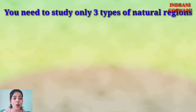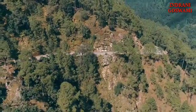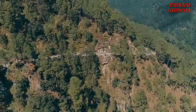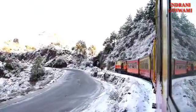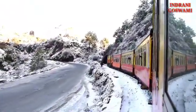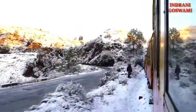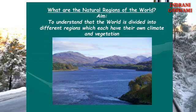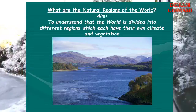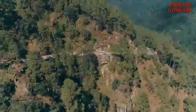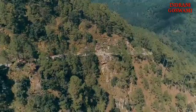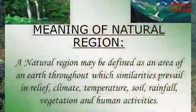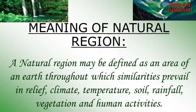Before starting this topic, we should know what a natural region is. Basically, a natural region refers to a part of the earth's surface which has a comparatively high degree of uniformity — uniformity means equality of structure, surface form, and climate within it. Every natural region is a homogeneous unit in which the climatic conditions, soil, natural vegetation, and human activities are uniform.